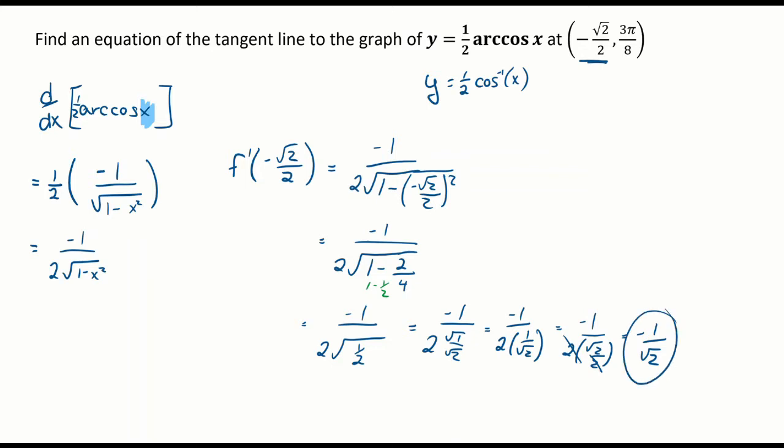Now let's work on finding the equation of the tangent line. It's y minus y₁ equals the slope times (x minus x₁), which is negative square root of 2 over 2. Let's distribute in my negative 1 over the square root of 2.